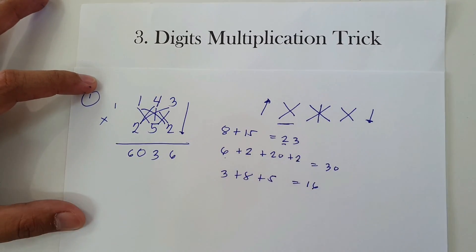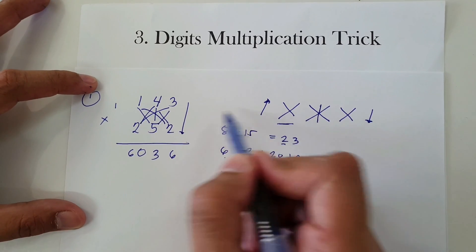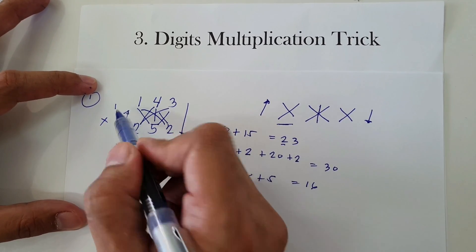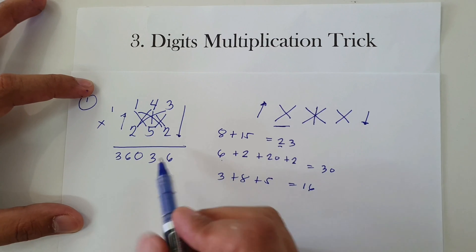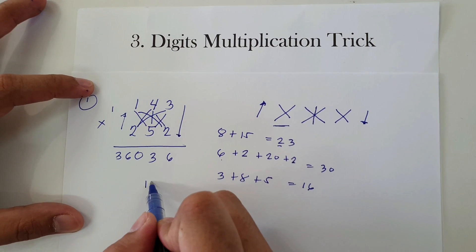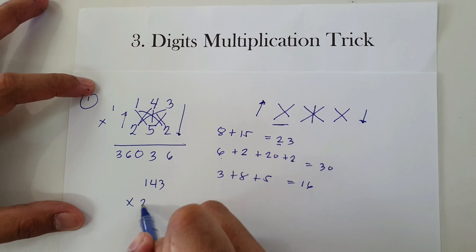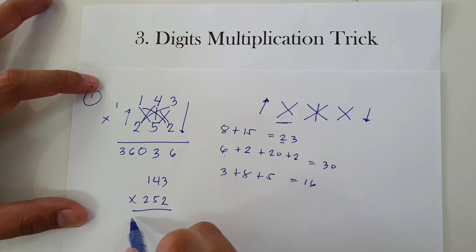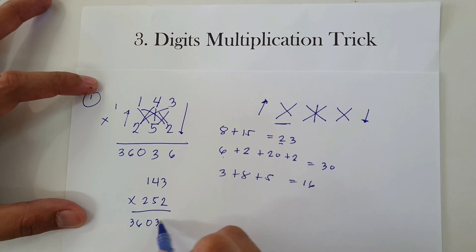Then up: 1 times 2 is 2, plus 1 carried, that is 3. So therefore, 143 times 252 equals 36,036.